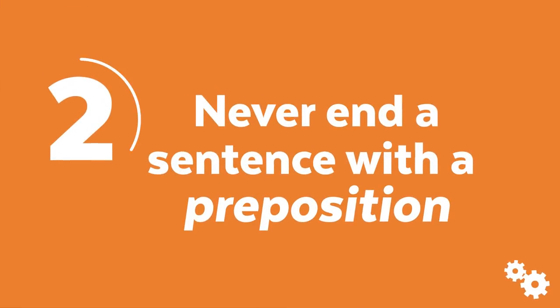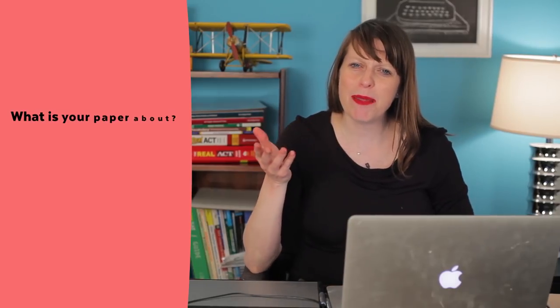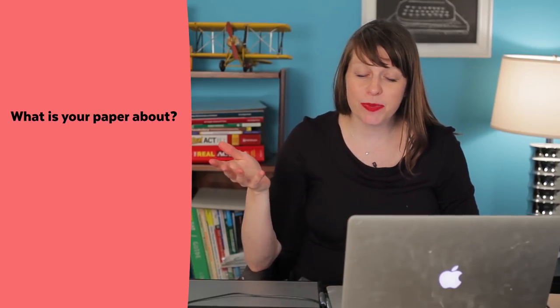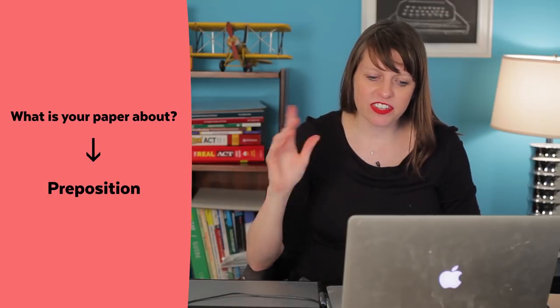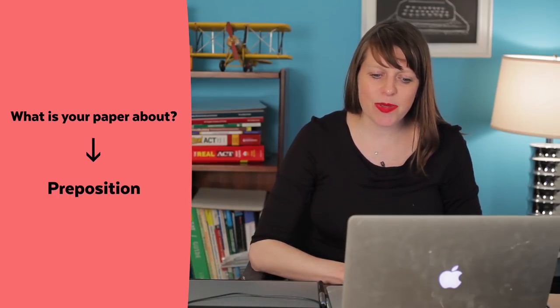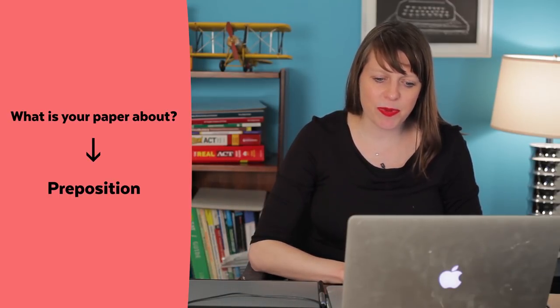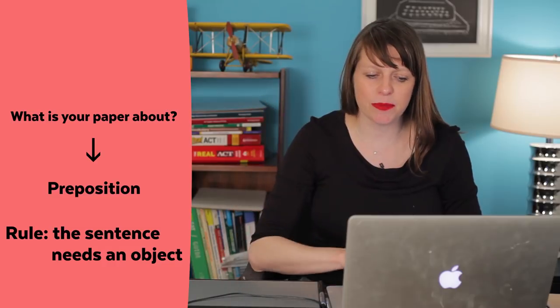Lie number two your teacher told you was: never end a sentence with a preposition. You can end a sentence with a preposition, and sometimes you have to in order to make it grammatically correct. For example, if I ask "What is your paper about?" — "about" is a preposition. The rule is not that you can't end a sentence with a preposition; it's that you need to have an object somewhere.